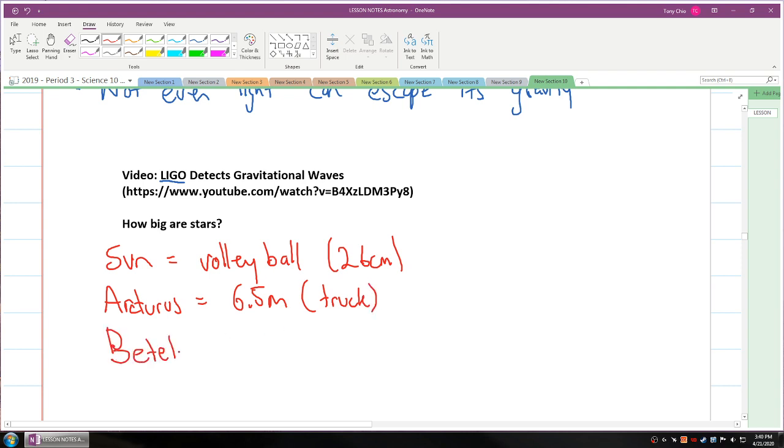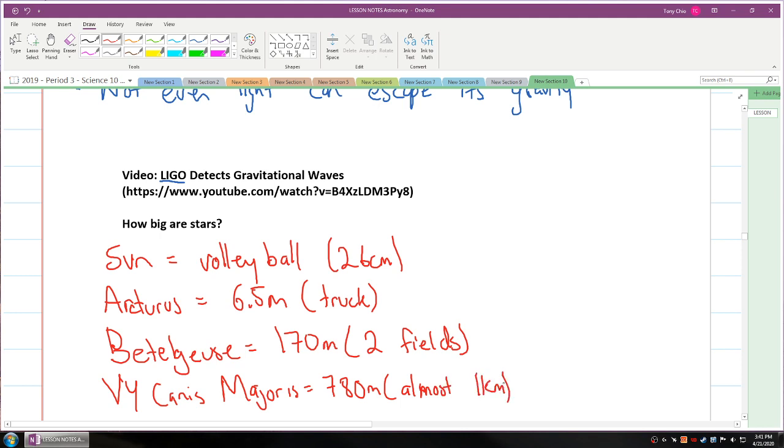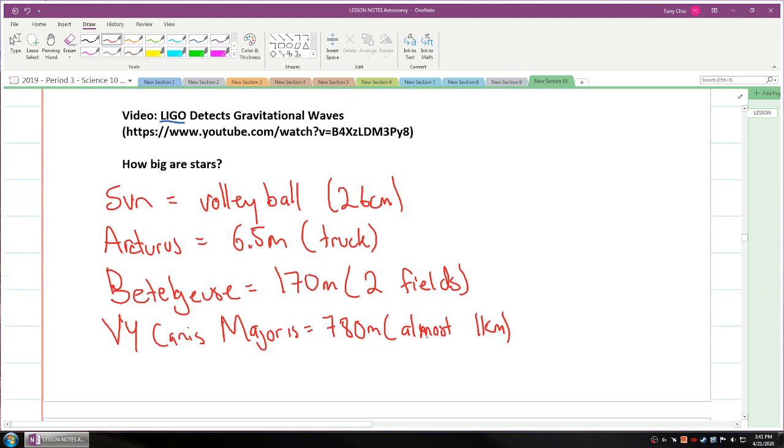This next star, Betelgeuse, is going to be about 170 meters across, which is about two fields. And lastly, VY Canis Majoris which at one point was classified as the largest star will be about 780 meters across which is almost one kilometer. That's the size of how big stars can grow.